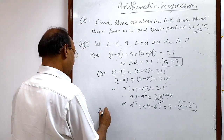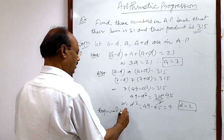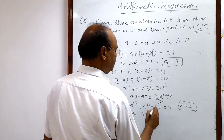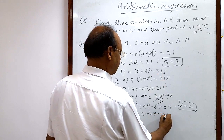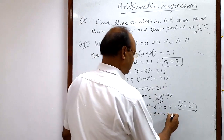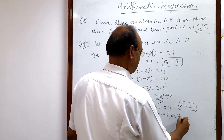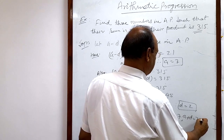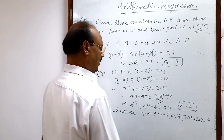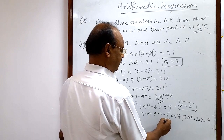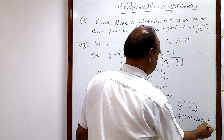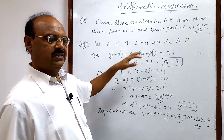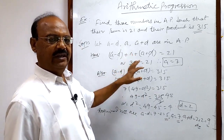The required numbers are: a minus d equals 7 minus 2 equals 5, a equals 7, and a plus d equals 7 plus 2 equals 9. So the answer is: first number is 5, second number is 7, and third number is 9. Very interesting and simple question — hope you have understood the solution. Thank you very much for watching this video.